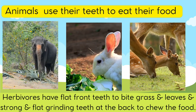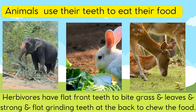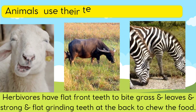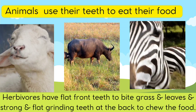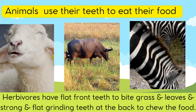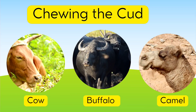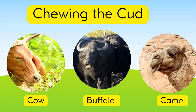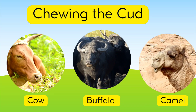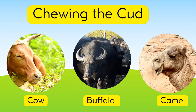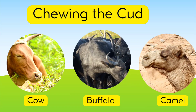How do animals eat their food? Animals use their teeth to eat their food. Herbivores have flat front teeth to bite grass and leaves, and strong and flat grinding teeth at the back to chew their food. Some animals like cow, buffalo and camel swallow their food without chewing it. Later, they bring this food back into their mouth and keep chewing it for several hours. This is called chewing the cud.